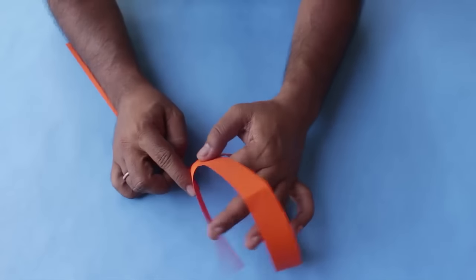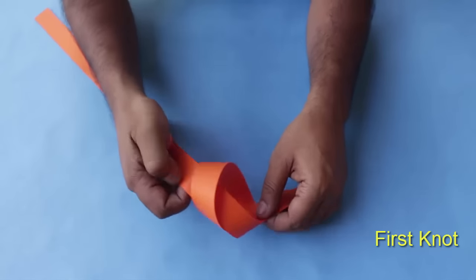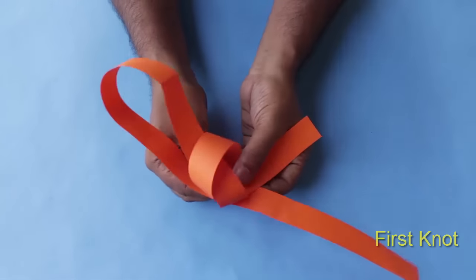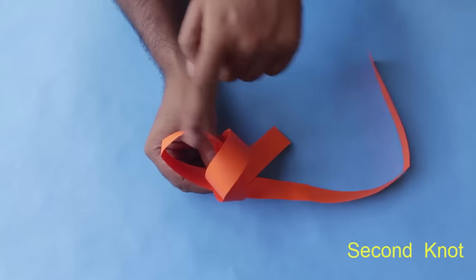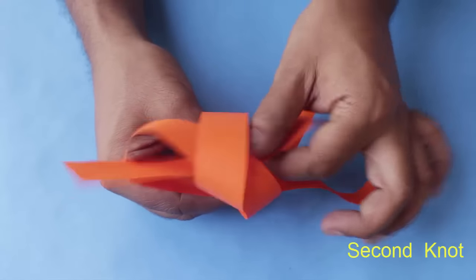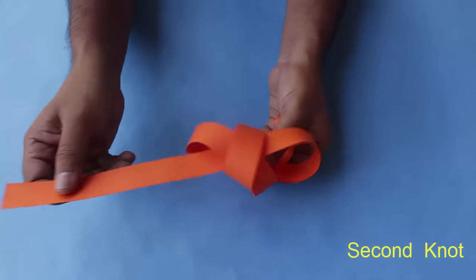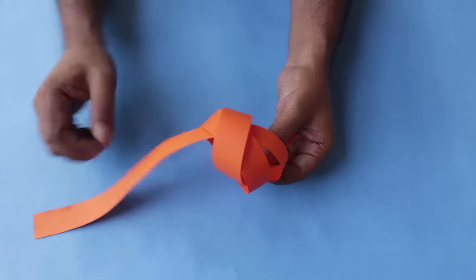To make a nine-sided polygon, you will need a longer strip and three knots which need to be woven in a similar manner, just like we made the seven-sided polygon. Take the first end back, pull it from where you started as shown here. This is the second knot.